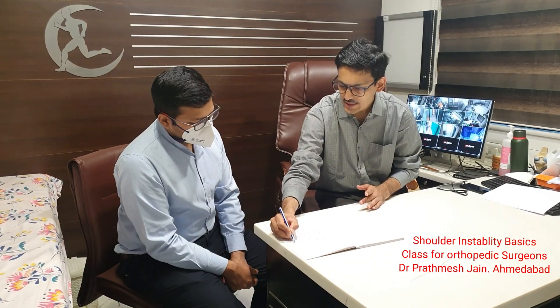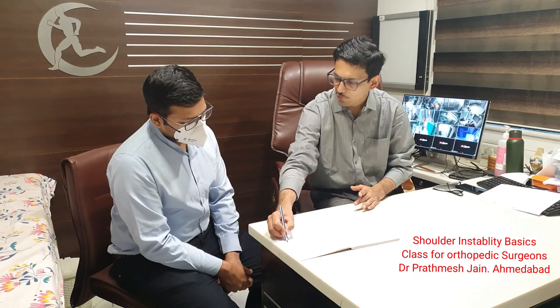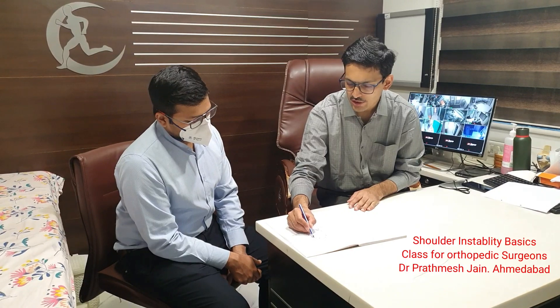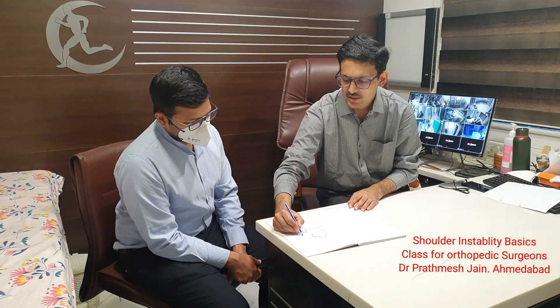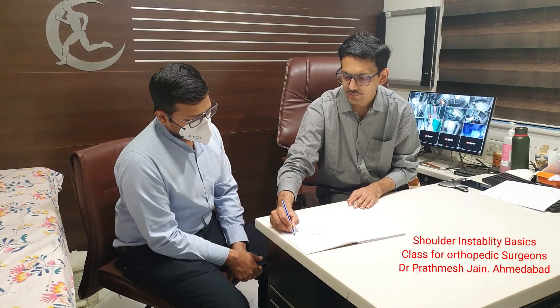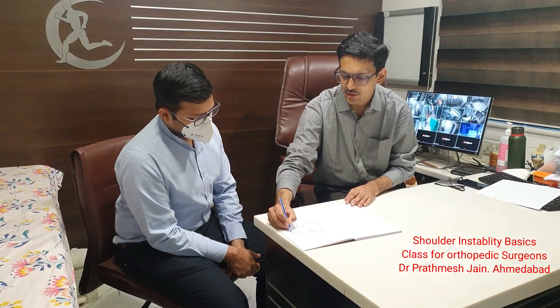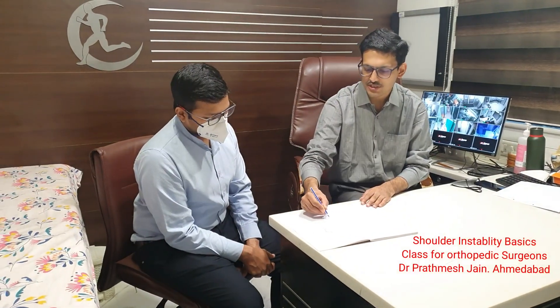The Buford lesion is a normal variant, so you should not mistake it for a labral tear. The Buford lesion is a thickened MGHL and may also be called a sublabral foramen or sublabral hole. These are the structures as far as the labral episode is concerned.